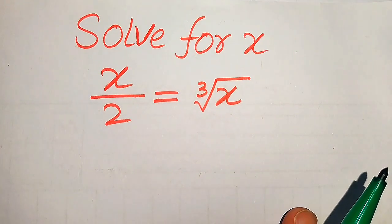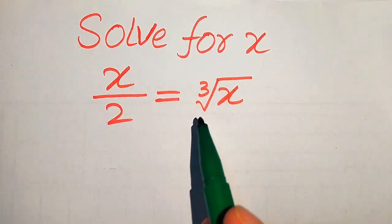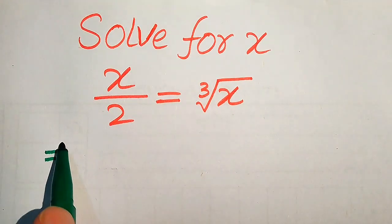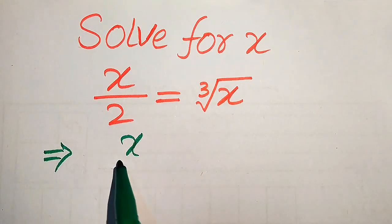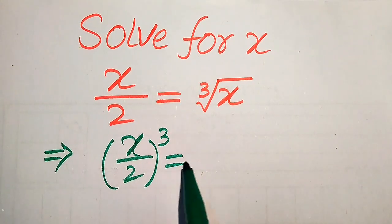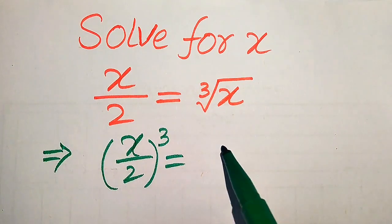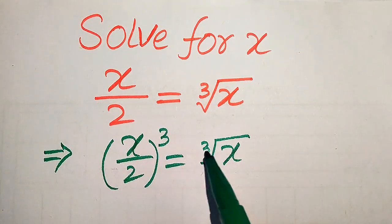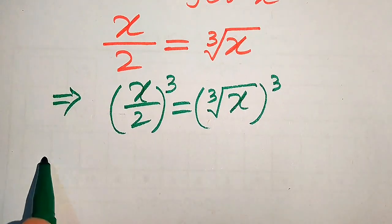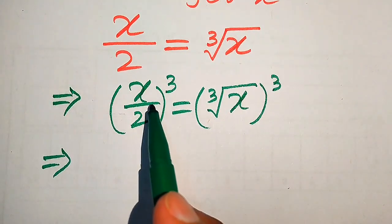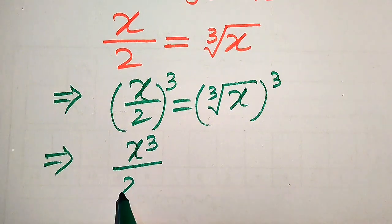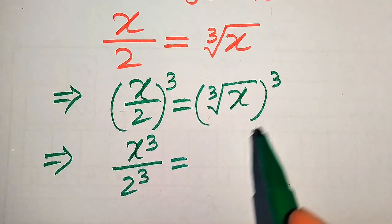Here we move towards the solution of this problem. First we need to remove the cube root sign from the right hand side. For this we need to take cube on both sides. When we take cube it will be written as cube root of x, whole cubed. Now we apply this cube separately on both values — it will become x cubed divided by 2 cubed.